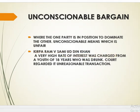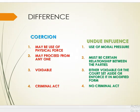The difference between undue influence and coercion: under coercion, physical force is used — the person is intimidated and a clear threat is given. Under undue influence, moral pressure is put on a weak mind and it must arise from the relationship existing between the parties, such as real or apparent authority or a fiduciary relationship. Under coercion, the acts are punishable under the Indian Penal Code and are treated as criminal acts; under undue influence, it is the domination of a weak mind by a strong person and there is no criminal act involved. In both cases the contract is voidable.